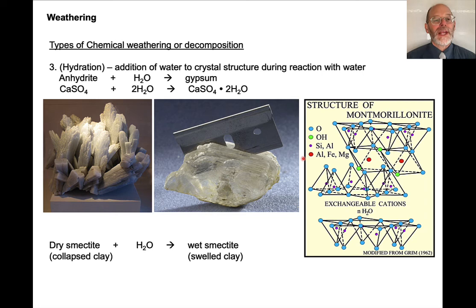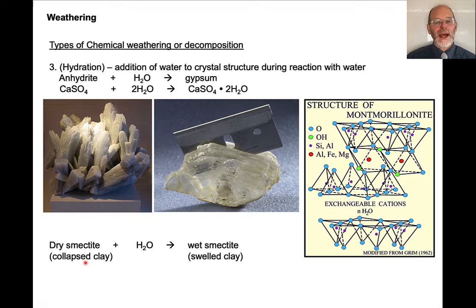There are also reactions that simply add water to a crystal structure. For example, the mineral anhydrite (CaSO₄, calcium sulfate) reacts with water to produce gypsum, which is a different mineral that has structural water within it. Similarly, there can be changes to mineral structures: if we take smectite, a type of clay, and dry it out, it has a collapsed structure. When we add water to it, it swells and makes wet smectite, which changes its physical properties and can impact slope stability.